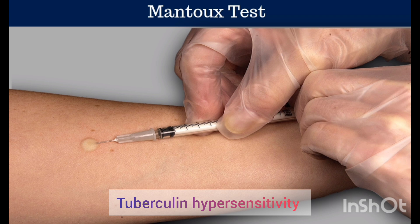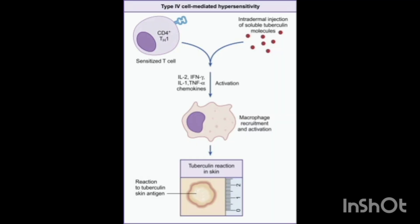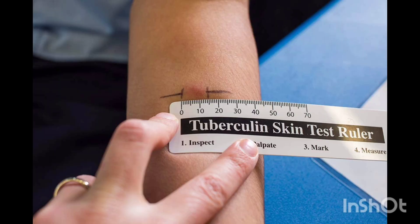An example of type 4 hypersensitivity reaction is tuberculin hypersensitivity, where a small dose of tuberculin or PPD — purified protein derivative — is injected intradermally in a patient who is either immunized or had a prior infection. An indurated inflammatory reaction will occur at the site within 48 to 72 hours.